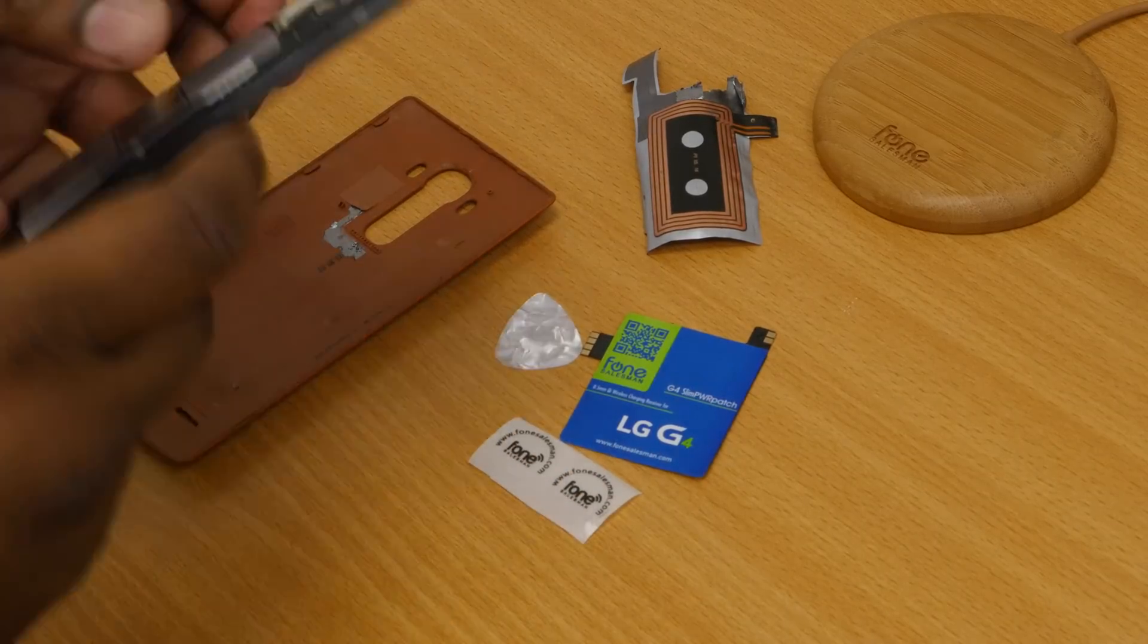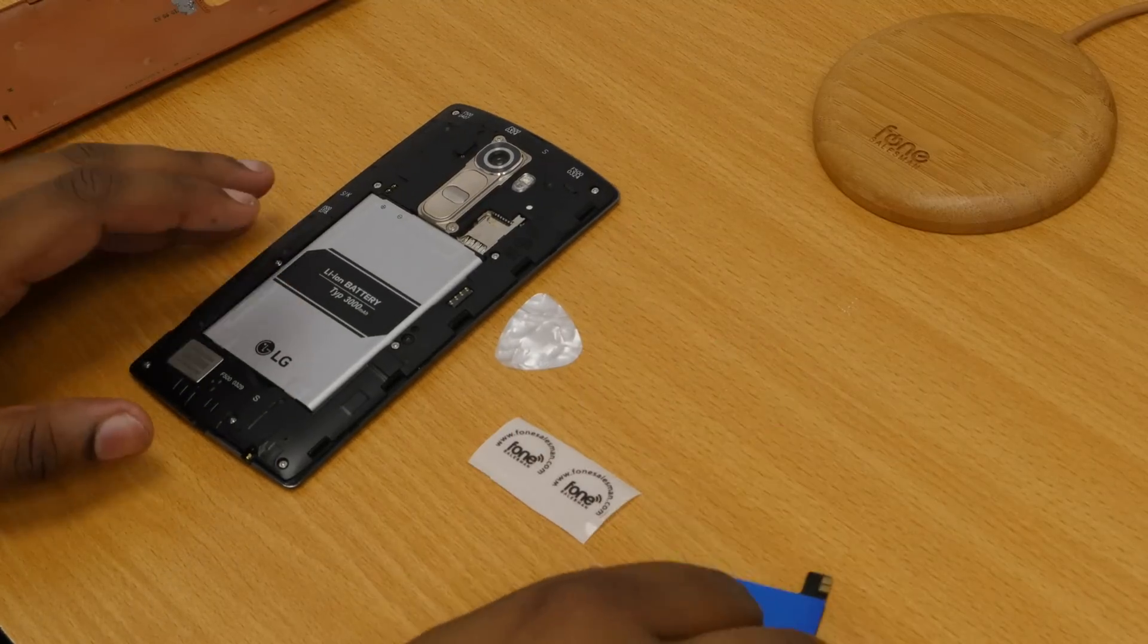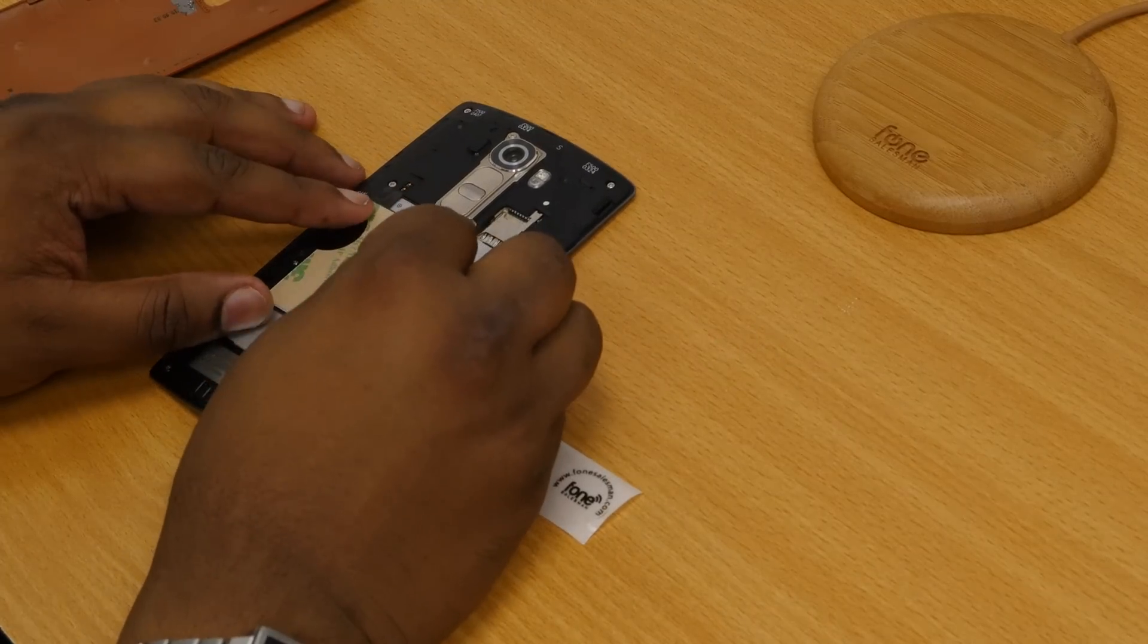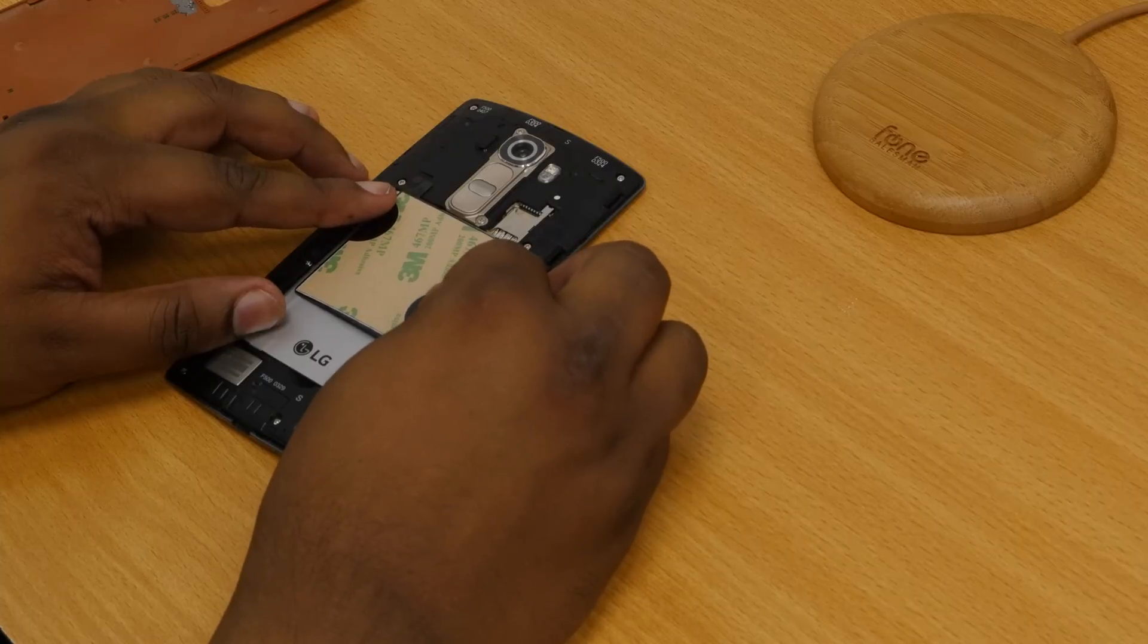After the whole of the sticker has come off successfully, take the G4 Slim Power Patch, put it down on top of the pins in the phone, and make sure the connectors on the card align well.